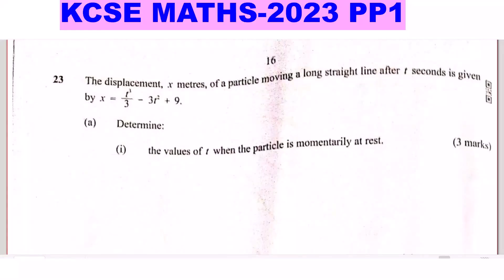Question 23. The displacement x meters of a particle moving along a straight line after t seconds is given by x equals t cubed divided by 3 minus 3t squared plus 9.